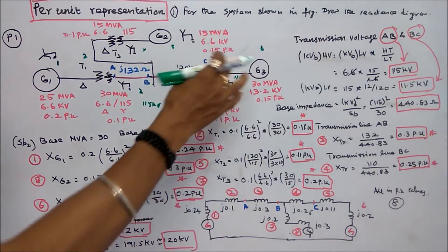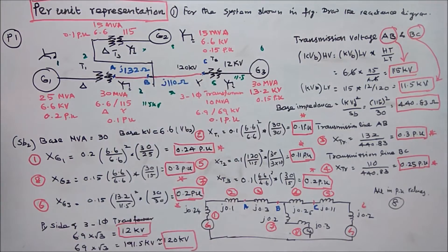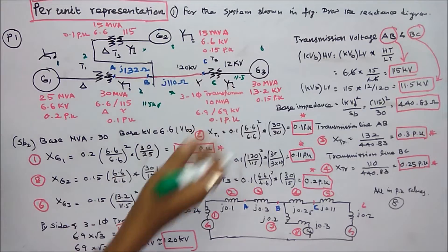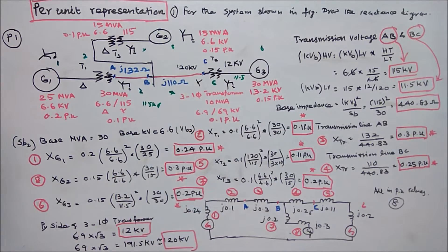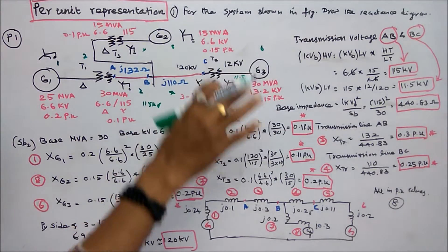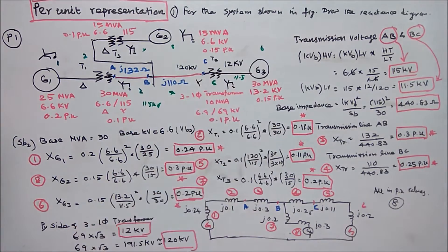Sixth is a generator. Rating is 30 MVA, 13.2 kV. Per unit reactance is 0.15 per unit.